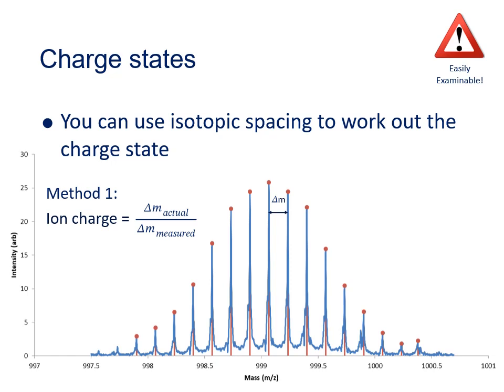There are several different methods you can use to work out the charge state of an ion. In this example we're lucky, we can see the isotopic distribution. In an isotopic distribution, the mass spacing between the peaks should be approximately 1 Dalton. And if the ion is singly charged they will be. But if the ion is doubly charged, that mass spacing between isotopologues will be half a Dalton. If it's triply charged, a third of a Dalton, quadruply charged, a quarter of a Dalton, and so on. So we can estimate the charge state of the ion by dividing the actual mass difference between isotopologue peaks by the measured mass difference between isotopologue peaks. It's always a good idea to measure the charge across multiple isotopic spacings rather than just between one pair of peaks.